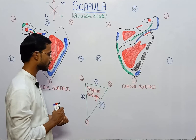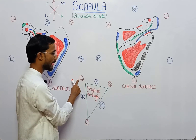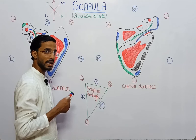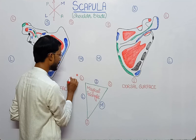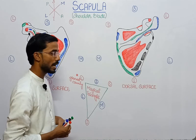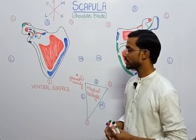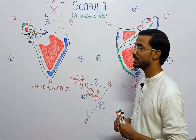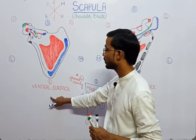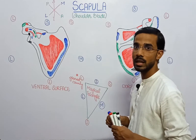We will start the lecture from the scapula, which is like a magical triangle. It has three angles and three borders. The three angles are the lateral angle, superior angle, and inferior angle. The three borders are the superior border, lateral border, and medial border. The glenoid cavity is always present at the lateral angle. We will discuss muscle attachments according to these angles and borders.